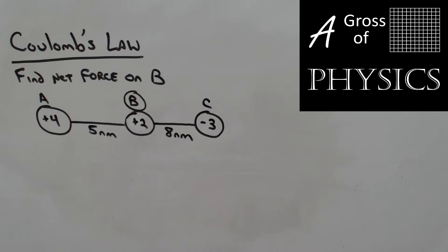In this problem, we're going to try to find the net force on particle B. A is going to apply a force on B, and so is C. We're going to have to find the force that each of these pairs applies on B, and then see if they combine or subtract one another. The first thing we need to do is get rid of these plus 4, plus 2, and minus 3, because that's telling us the number of excess electrons and protons.